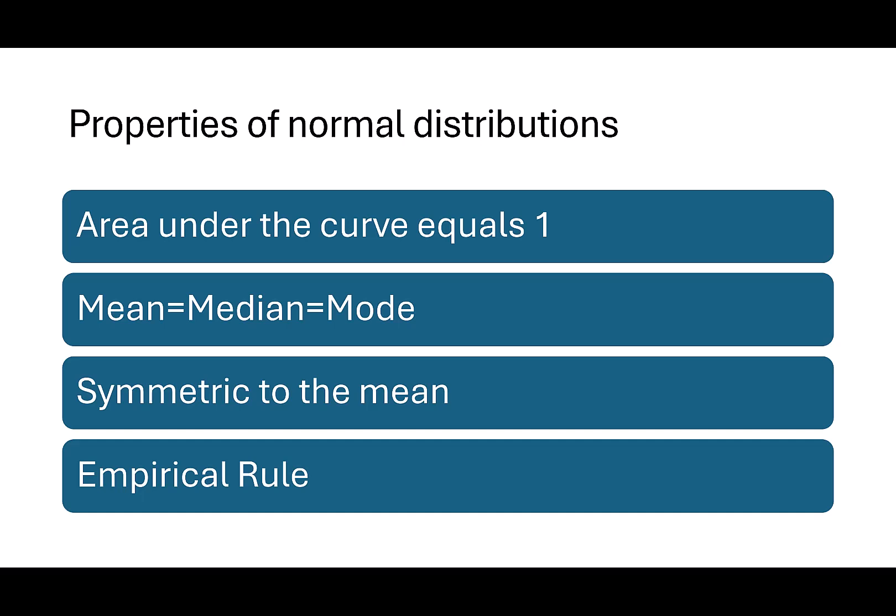The curve is symmetric to the mean, so half of the data will be on the right, half of the data will be on the left. Lastly, the curve follows the empirical rule that we'll look at a little closer in just a minute.